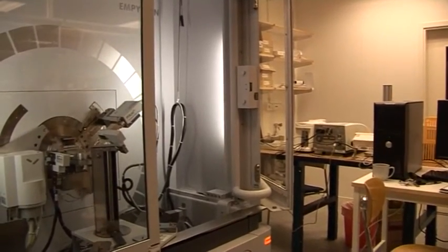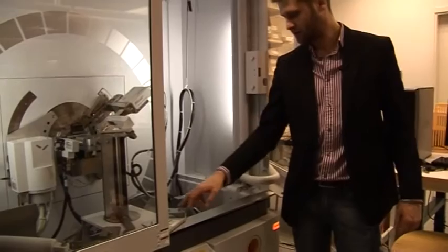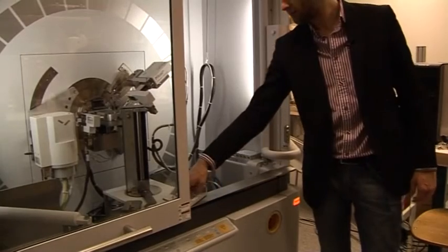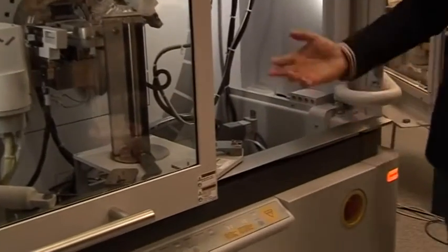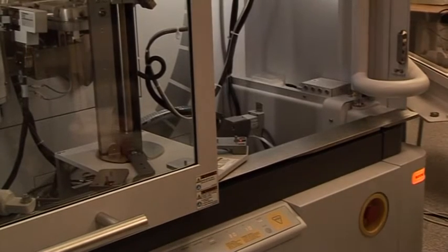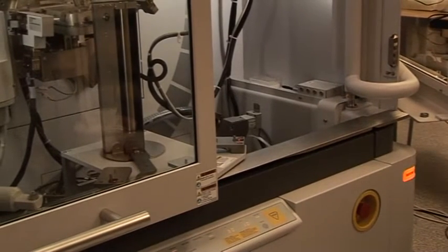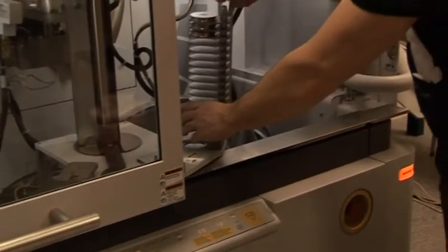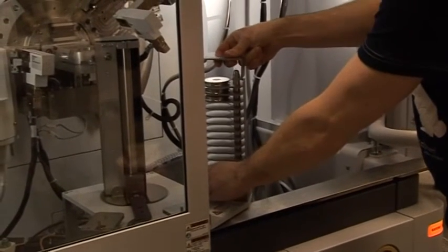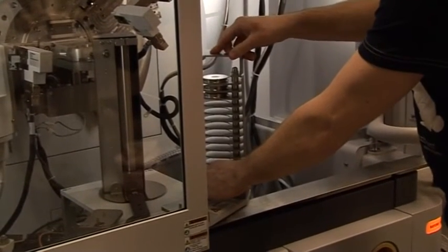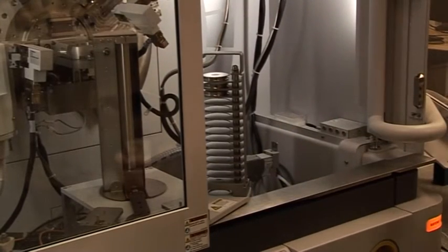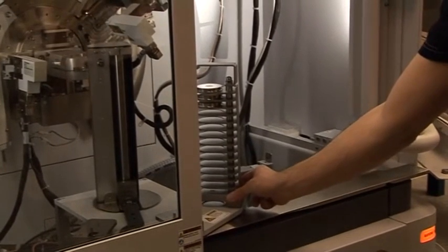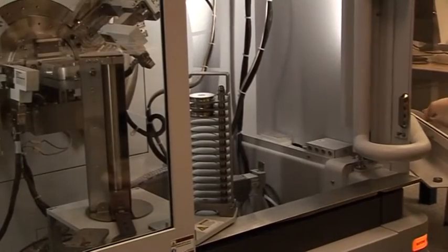Then you slide it out. As you can see here we have three available positions where we can put the sample changer, and they all have names: A, B, and C. I usually put it in A because it's the most logical. Then you make sure that it seats nicely. It doesn't look like there's any gap or anything, so it looks very firm. So then we can just close the door.